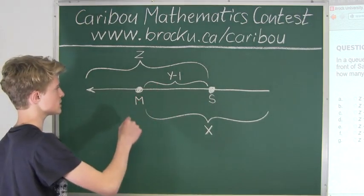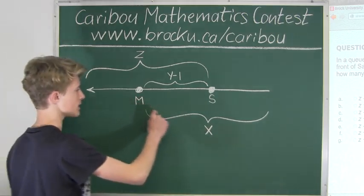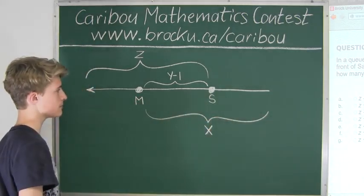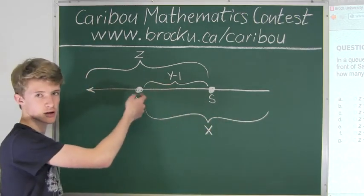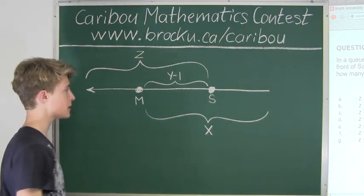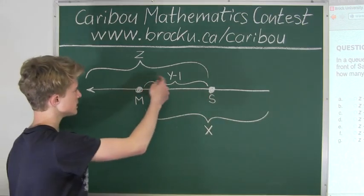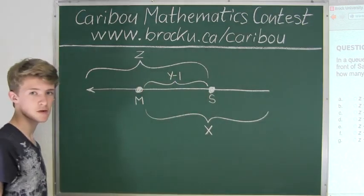So here, it states in the question that people behind Mark, which is not including Mark, is X, and the people in front of Sam, which is not including Sam, is Z. And it also states that the people between Mark and Sam, so not including them, is Y-1. So let's start.